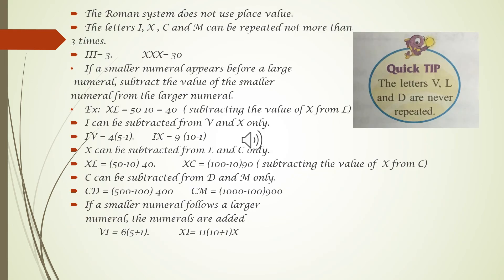Rules for writing numbers as Roman numerals are as follows. Rule 1: Roman system does not use place value. The letters I, X, C and M can be repeated not more than 3 times. Example: